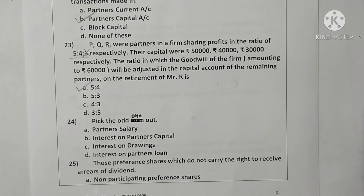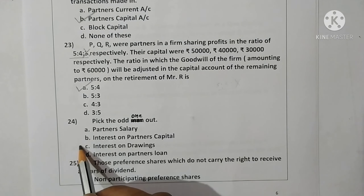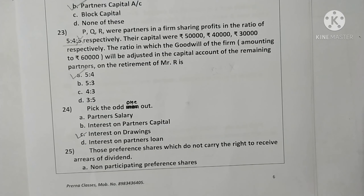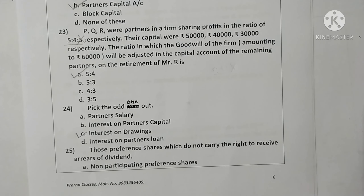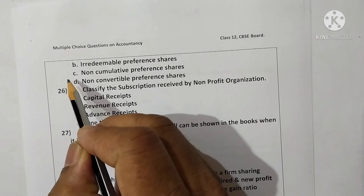Question twenty-four — pick the odd one: partner salary, interest on capital, interest on drawings, interest on partner's loan. Interest on capital and others are expenses, but interest on drawings is income. Therefore the odd one is interest on drawings. Question twenty-five: those preference shares which do not carry the right to receive arrears of dividend are non-cumulative preference shares. Option C is correct.